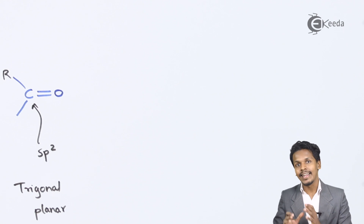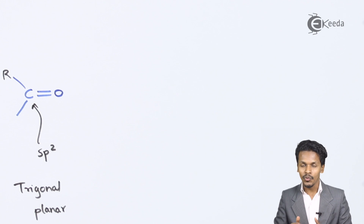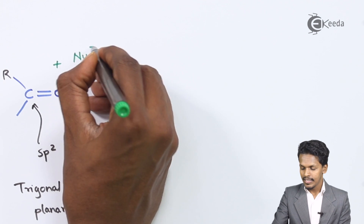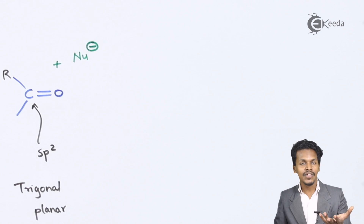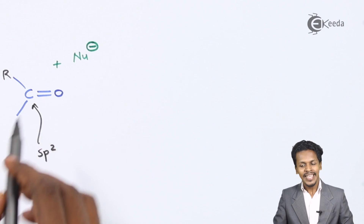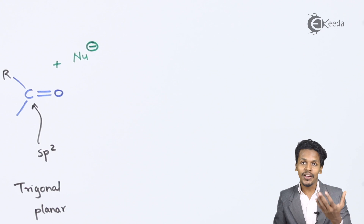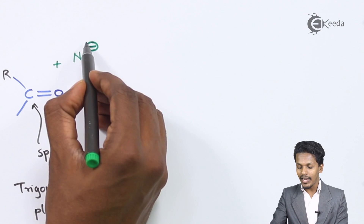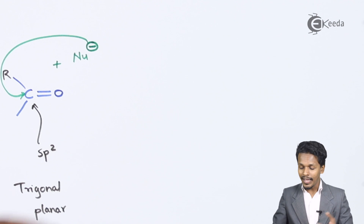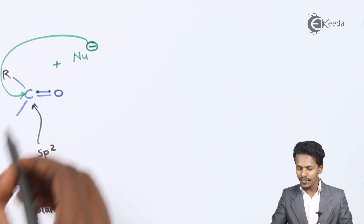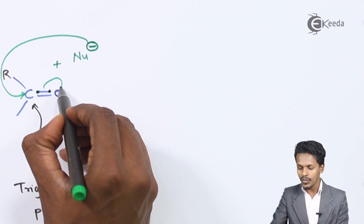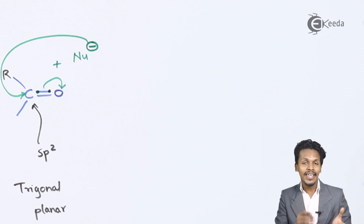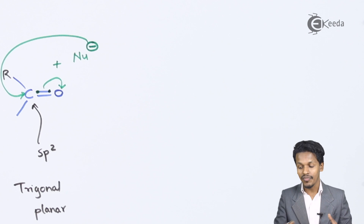Now suppose a nucleophile gets attached to this carbonyl group. A nucleophile is attracted towards the electrophile. Since carbon is partially positive and oxygen is partially negative, the nucleophile will attack the carbon atom. Thereby, the electron pair between the carbon and the oxygen will shift towards the oxygen, making the structure very different from the earlier one.